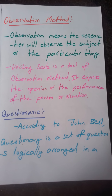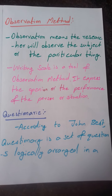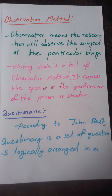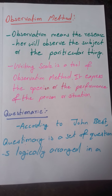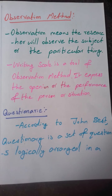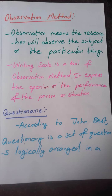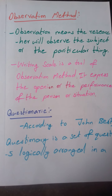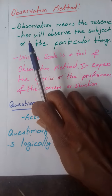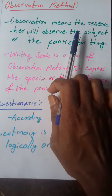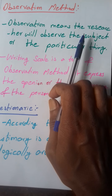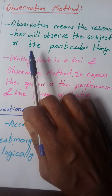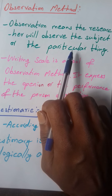In this topic, we will cover the Observation Method, then Questionnaires and Checklist. First, we study about the Observation Method. What is Observation? Observation means the researcher will observe the subject or a particular theme.